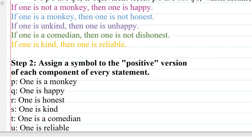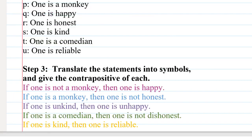So at this point we have a letter assigned to represent each component. So we're done with step two. So for step three we're going to translate each of our statements into symbols. The first statement, if one is not a monkey, then one is happy, is going to be not P implies Q.